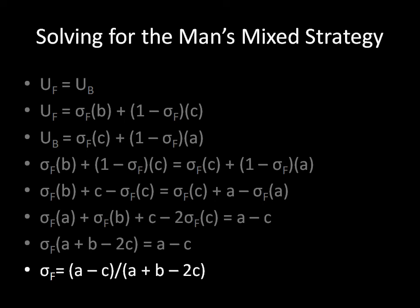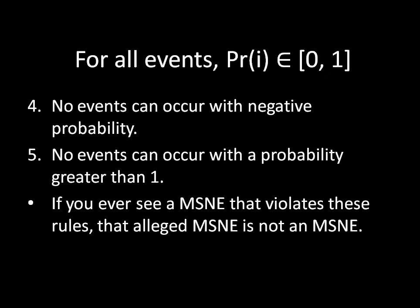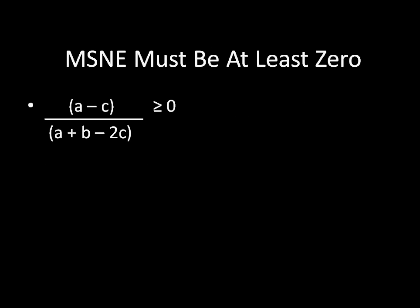But before we are done, we have to make sure that this is going to be a valid mixed strategy. And remember our rules: no event can occur with negative probability and no event can occur with a probability greater than 1. So first, the mixed strategy must be at least 0. We know that our numerator is going to be positive because a is greater than c. So for the fraction to be positive, a plus b minus 2c must be positive as well.